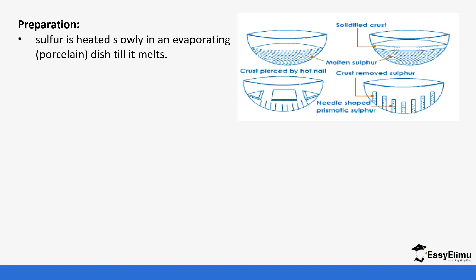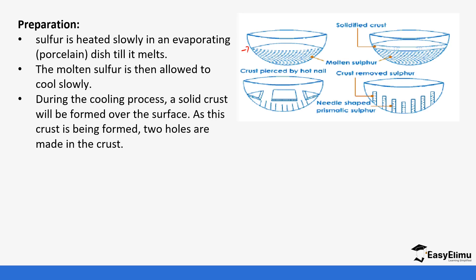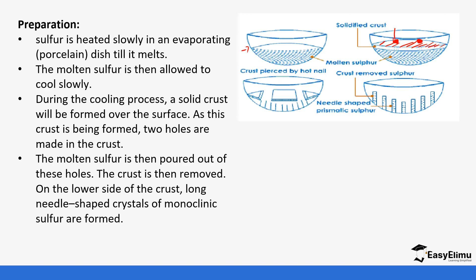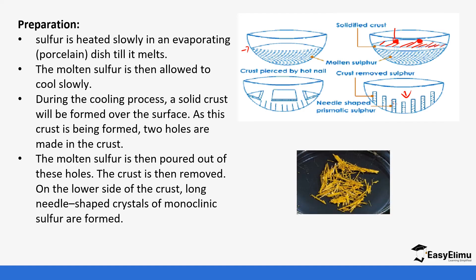Monoclinic sulfur is produced by heating sulfur slowly in an evaporating dish until it melts, then allowing it to cool slowly. During cooling, a solid crust forms on top. You make two holes in this crust and pour out the molten sulfur beneath. On the lower side you will see needle-like prismatic crystals — these are monoclinic sulfur.